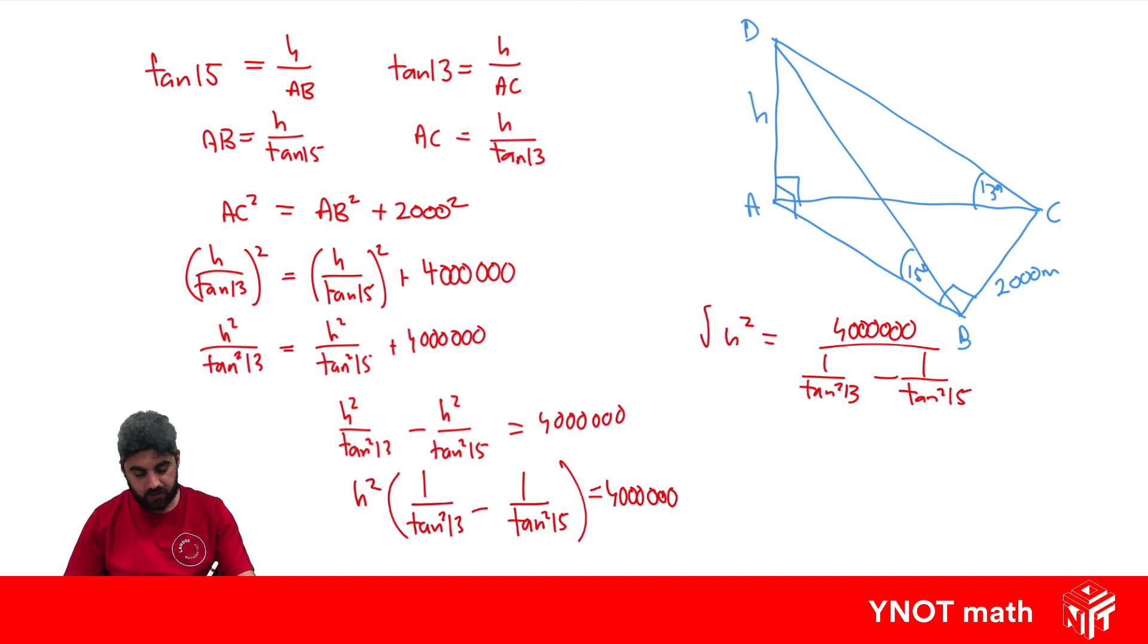To solve for H we're just going to square root both sides. The square and square root cancel out and everything on the right can go in the calculator and you'll get 909.7 meters to one decimal place.